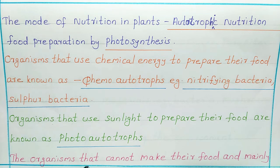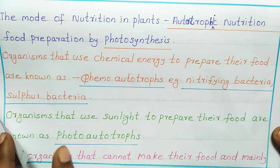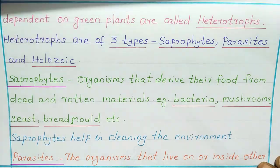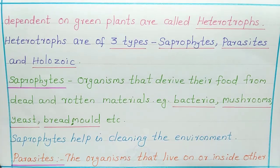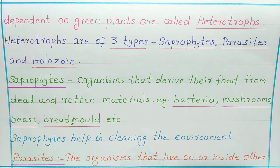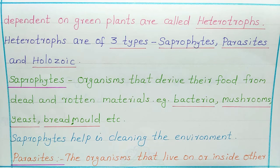The organisms that cannot make their own food and mainly depend on green plants are called heterotrophs. 'Hetero' is a Greek word meaning 'other.' Heterotrophs are of three types.